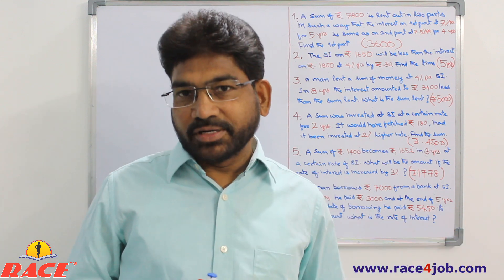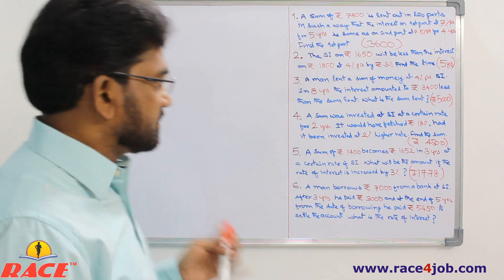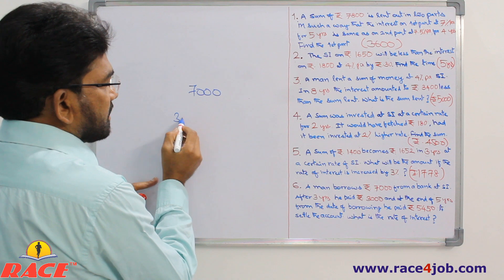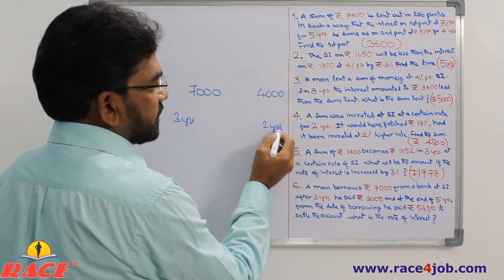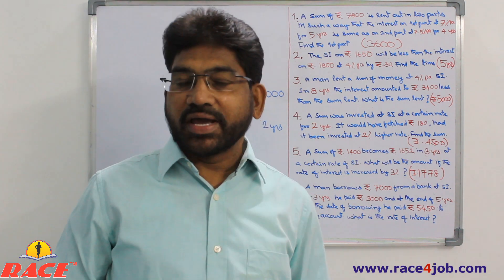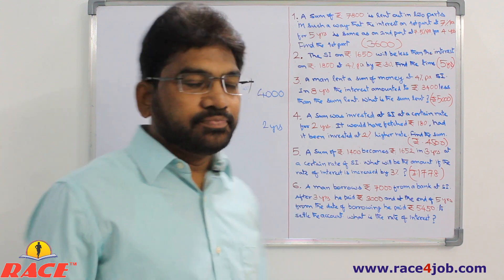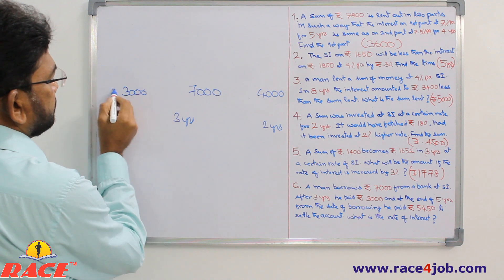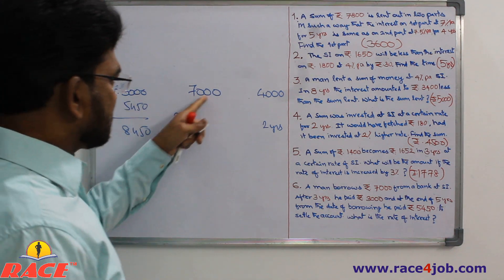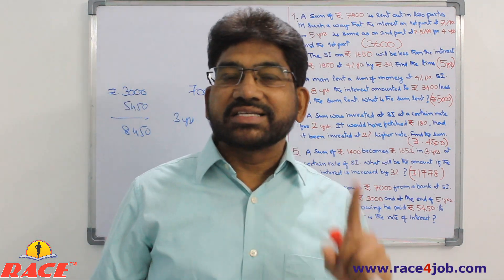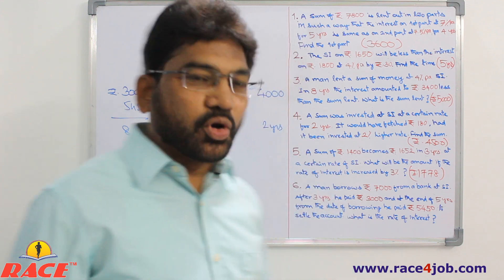For the first 3 years, interest is calculated on 7000. After that, he paid back 3000, so for the next 2 years interest is calculated on 4000 only. Total paid = 3000 + 5450 = 8450. He borrowed 7000, so total interest paid = 8450 − 7000 = 1450. What is this 1450 as a percentage of the combined principal-time sum?